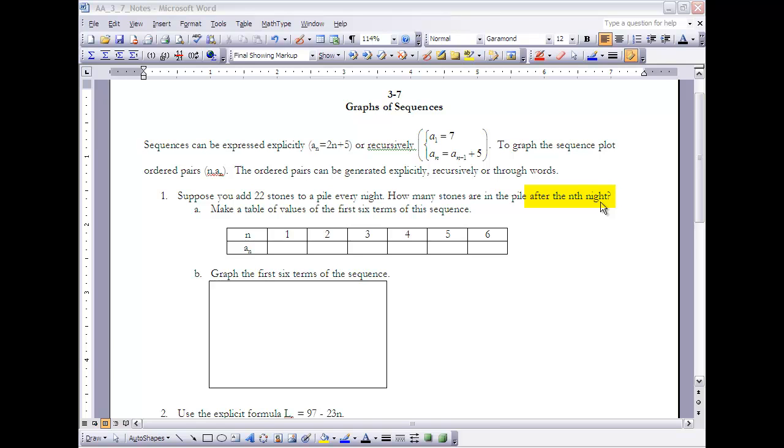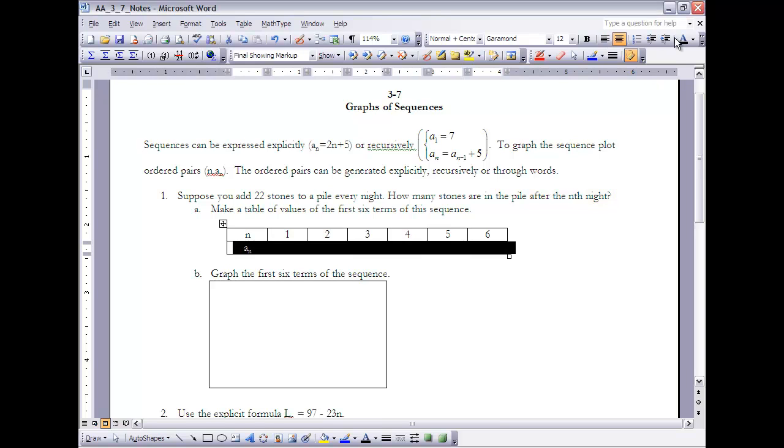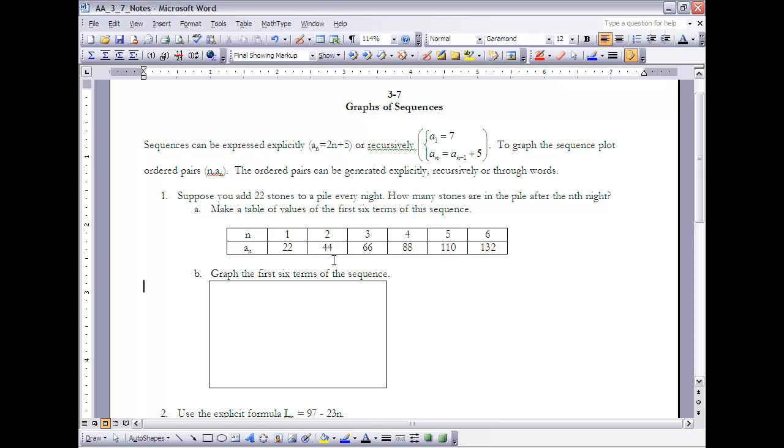The first term is after one night of putting the 22 stones on the pile, so we'll start with 22 stones. Then each night we're going to be adding 22 stones to that pile, so after six nights we'll have 132 stones. All of these are ordered pairs that we can graph.